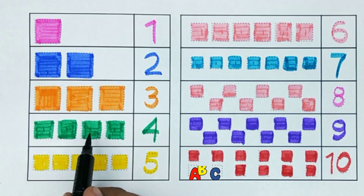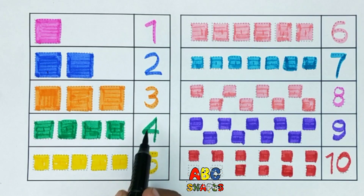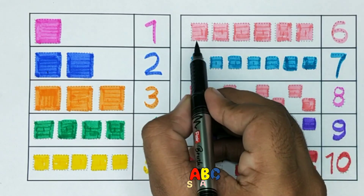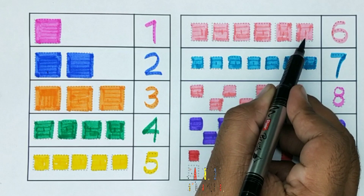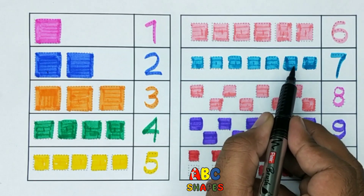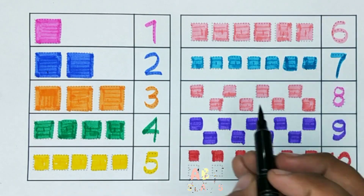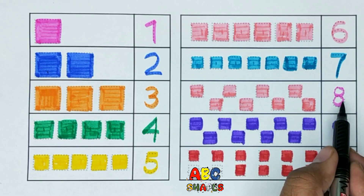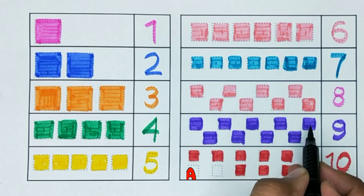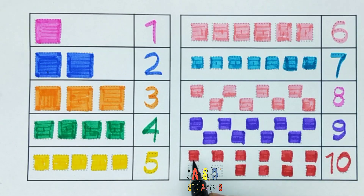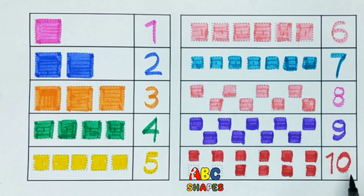1, 2, 3, 4 — number 4. 1, 2, 3, 4, 5 — number 5. 1, 2, 3, 4, 5, 6 — number 6. 1, 2, 3, 4, 5, 6, 7 — number 7. 1, 2, 3, 4, 5, 6, 7, 8 — number 8. 1, 2, 3, 4, 5, 6, 7, 8, 9 — number 9. 1, 2, 3, 4, 5, 6, 7, 8, 9, 10 — number 10.